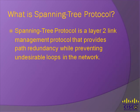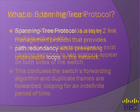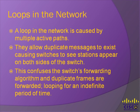So what is the spanning tree protocol? The spanning tree protocol is a link management protocol that provides path redundancy while preventing undesirable loops in the network. A loop in the network is caused by multiple active paths. These paths allow duplicate messages to exist, causing switches to see stations appear on both sides of the switch. This confuses the switch's forwarding algorithm and duplicate frames are forwarded. Without spanning tree protocol, a local area network with redundant links would cause Ethernet frames to loop for an indefinite period of time.